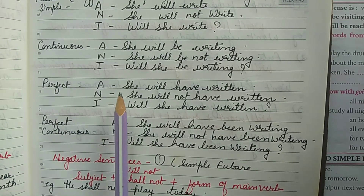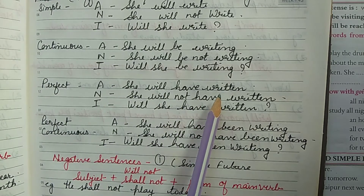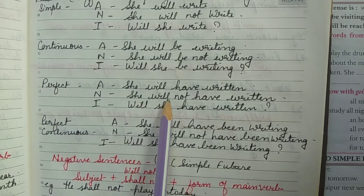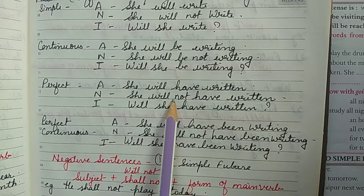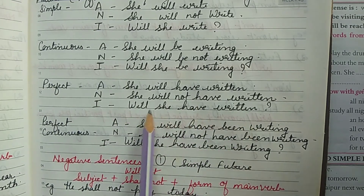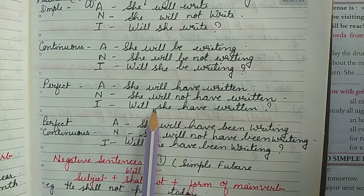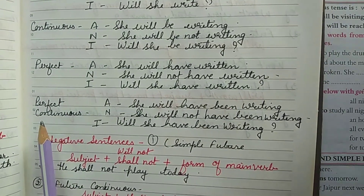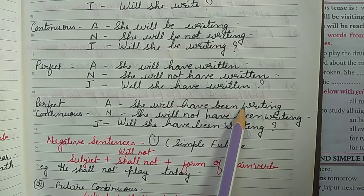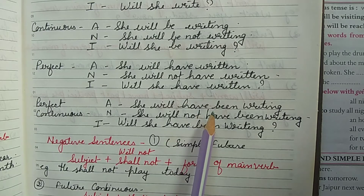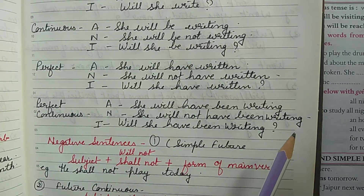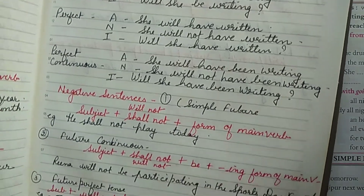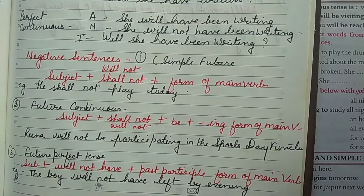For the future perfect tense: affirmative — 'She will have written' (have + V3 for the perfect case); negative — 'She will not have written'; interrogative — 'Will she have written?' (will moves to first position, subject to second). For the future perfect continuous: affirmative — 'She will have been writing'; negative — 'She will not have been writing'; interrogative — 'Will she have been writing?'